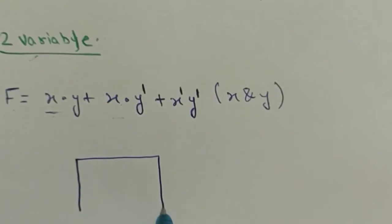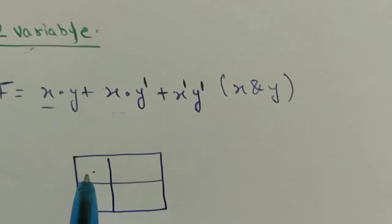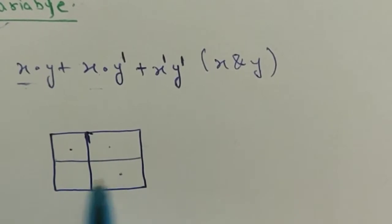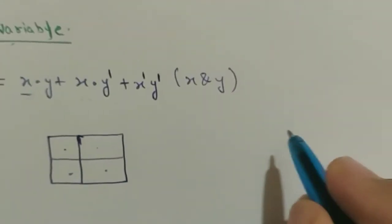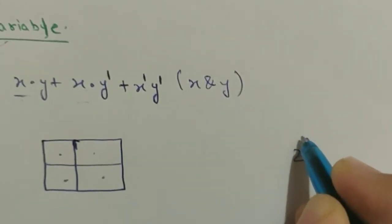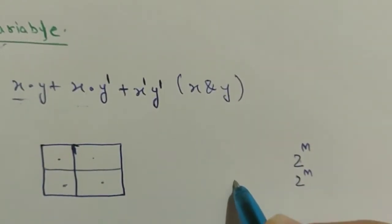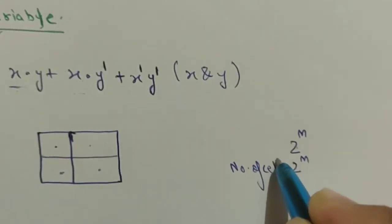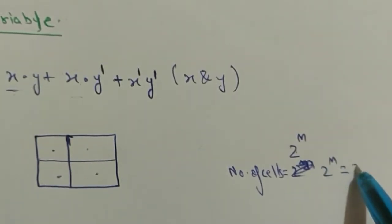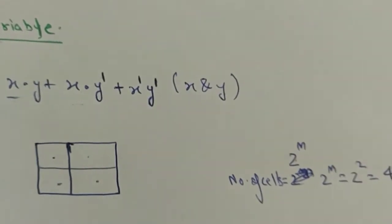First you draw a table like this. These are the four cells of the K-map. There is also a formula to calculate the number of cells: the formula is 2 to the power n, where n is the number of variables. Here n equals 2, therefore the number of cells is 2 to the power 2, which equals 4 cells.